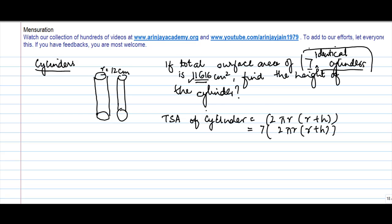And we are told that this total area is 11,616. So 11,616 is equal to 14 into π 22 by 7 into radius. What is the radius? Radius we know is 12 cm into radius 12 plus height. Height is the variable here.